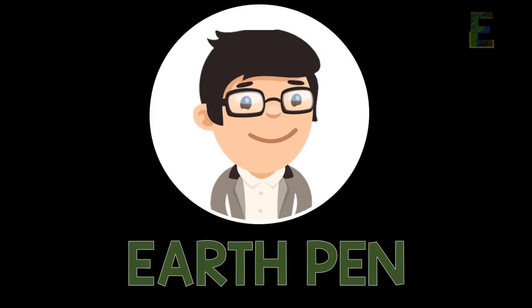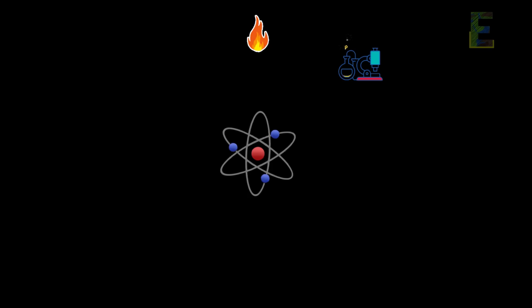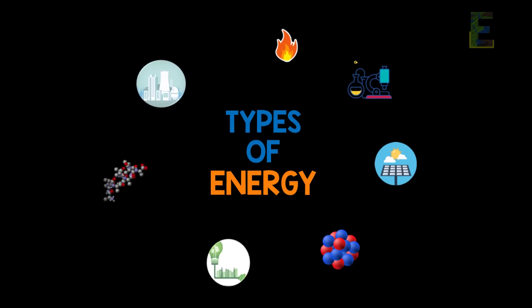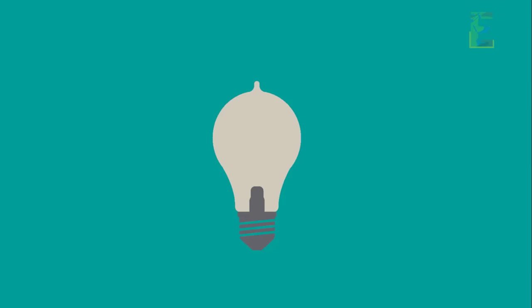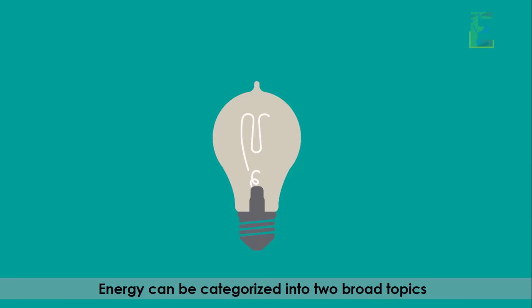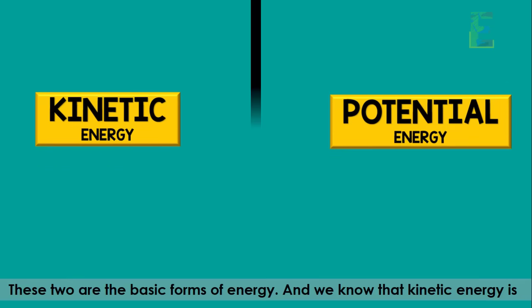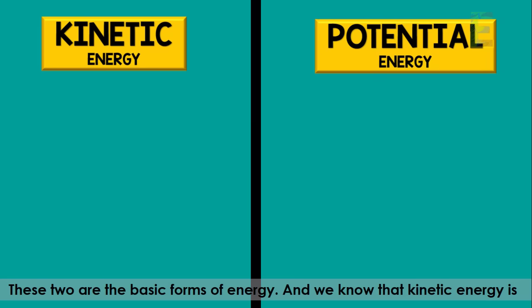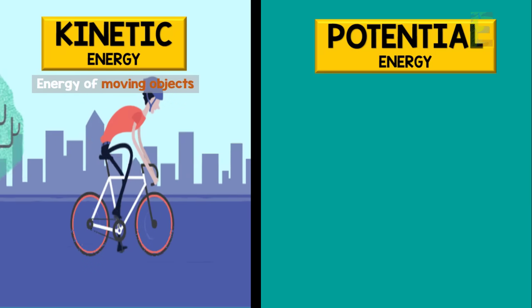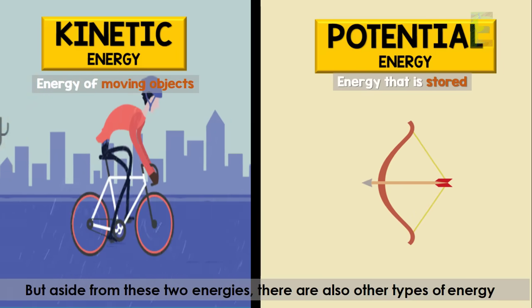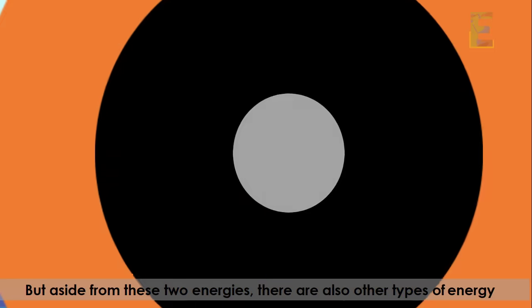Hello learners, this is Earth Pen. Today we are going to talk about another fun topic in physics. It is all about the types of energy. Energy can be categorized into two broad topics: kinetic energy and potential energy. These two are the basic forms of energy. Kinetic energy is the energy of moving objects, while potential energy is energy that is stored.